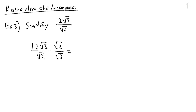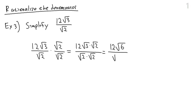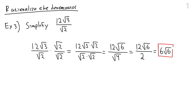In the numerator we get 12 times radical 3 times radical 2. In the denominator we get radical 2 times radical 2. Continuing to simplify using the multiplicative property, we get 12 times radical 6 in the numerator. On the bottom, radical 4 is just 2. So we have 12 times radical 6 divided by 2. Since 12 divided by 2 is 6, the final answer is 6 times radical 6. As long as the denominator does not have any more radicals in it, we are done.